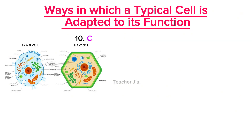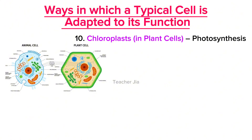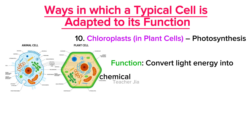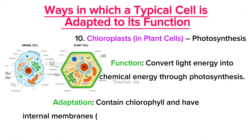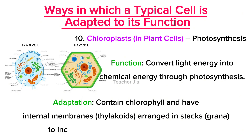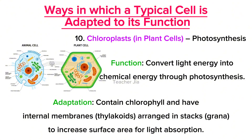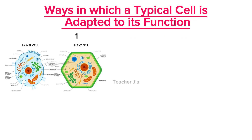Next is chloroplasts, found in plants, which are used in photosynthesis. Their function is to convert light energy into chemical energy through photosynthesis. Their adaptation is that chloroplasts contain chlorophyll and have internal membranes known as thylakoids, arranged in stacks known as grana, to increase surface area for light absorption.